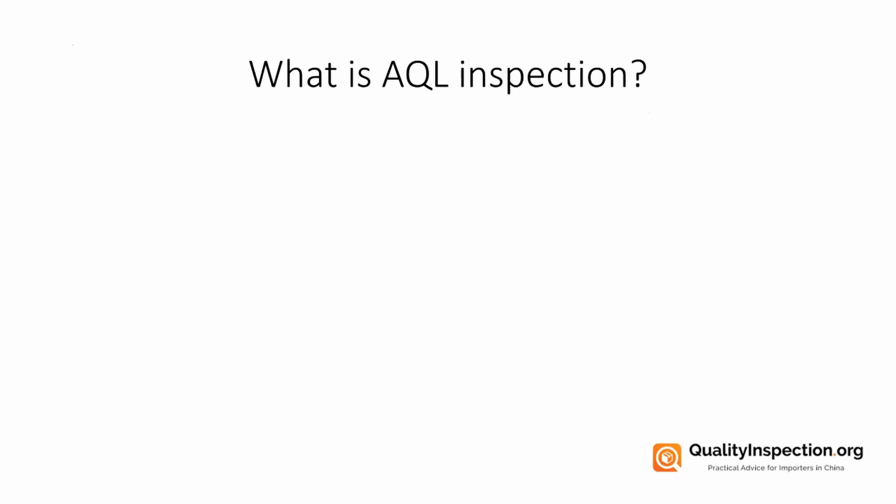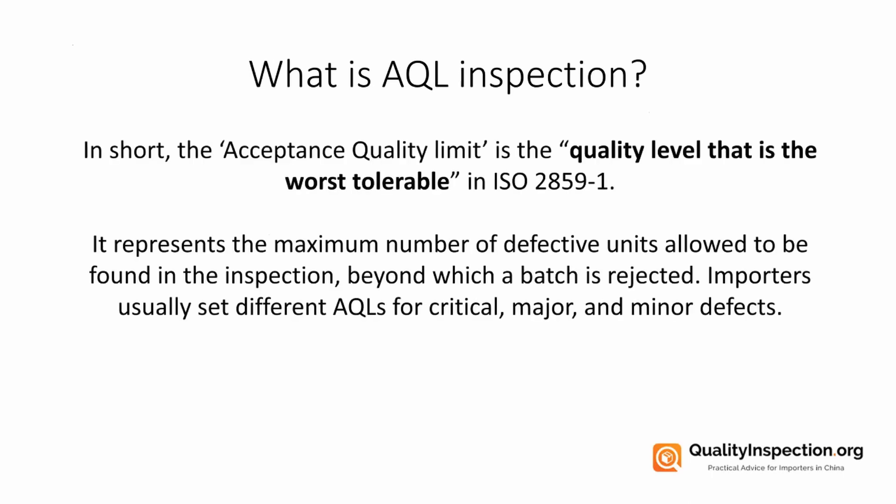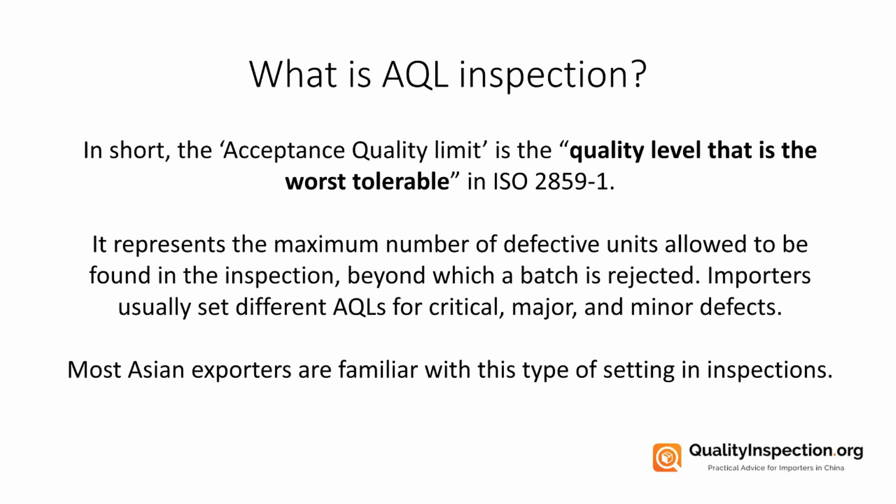So what is an AQL inspection? AQL stands for Acceptance Quality Limit — the quality level that is the worst most tolerable in ISO 2859-1. This represents the maximum number of defective units allowed to be found in the inspection, beyond which a batch is rejected. Importers usually set different AQLs for critical, major, and minor defects. A good thing here is that most Asian exporters — your suppliers — are familiar with this type of setting in inspections.